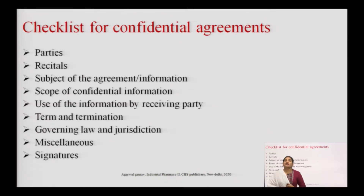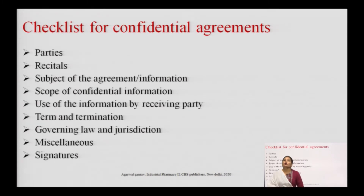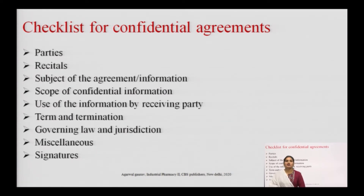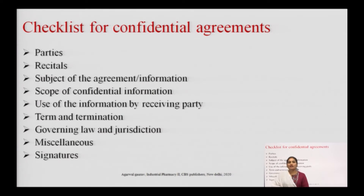The checklist for a confidential agreement — what is required in the confidential agreement — includes: first, parties; second, recitals; third, subject of the agreement or the information; fourth, scope of the confidential information; fifth, use of the information by the receiving party; sixth, terms and termination; seventh, governing law and jurisdiction; eighth, miscellaneous; and last, signature.